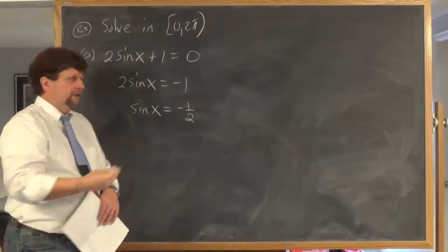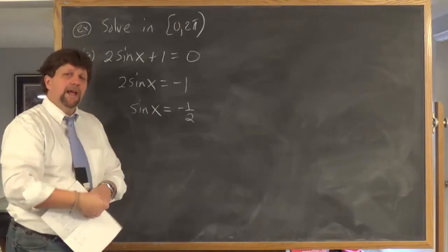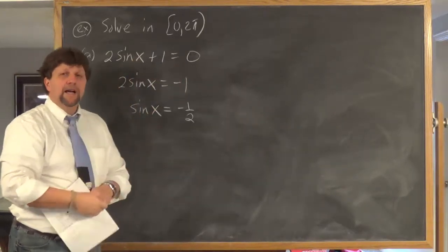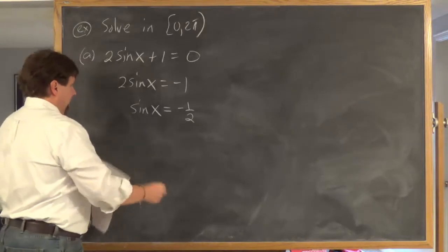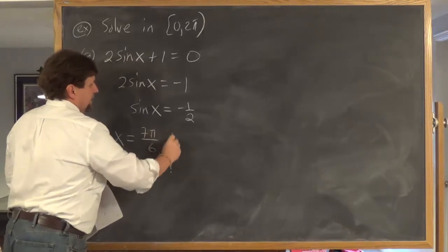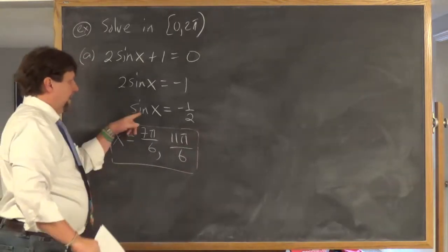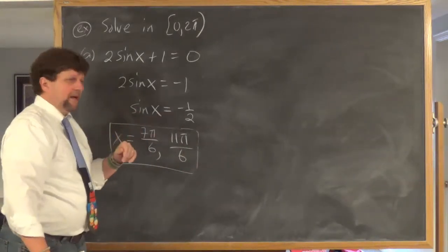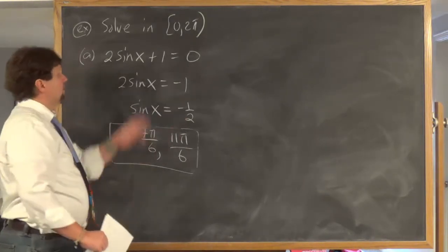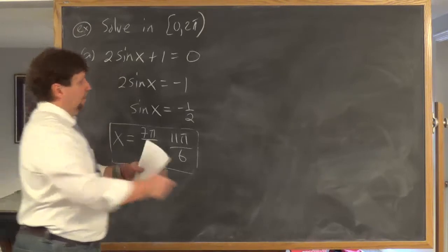This takes us right back to the unit circle — something we should know. Where does sine equal -1/2 on the unit circle? There are two points: those values of x are 7π/6 and 11π/6. The sine of 7π/6 is -1/2, and the sine of 11π/6 is -1/2. So this equation has two solutions: 7π/6 and 11π/6.